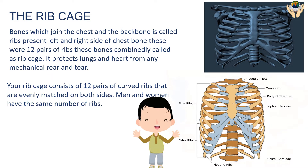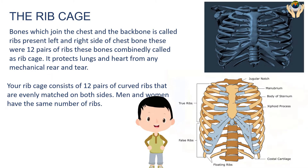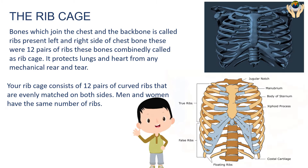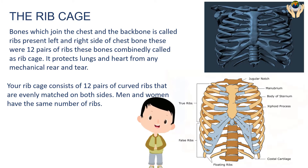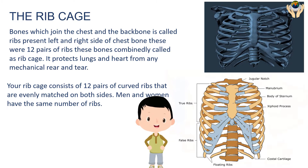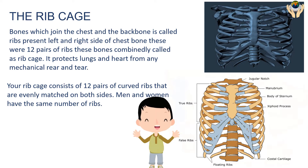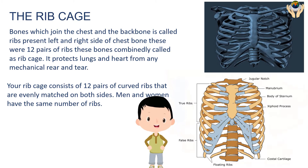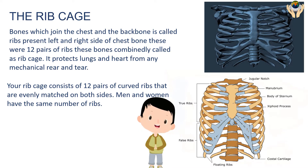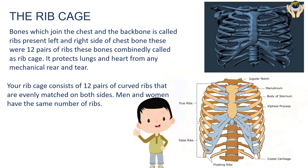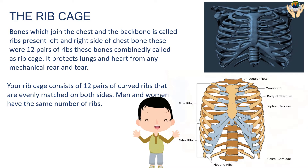The rib cage — bones which join the chest and the backbone are called ribs, present on the left and right side of the chest. There are 12 pairs of ribs, and these bones combined are called the rib cage. It protects the lungs and heart from any mechanical wear and tear. Your rib cage consists of 12 pairs of curved ribs matched on both sides. Men and women have the same number of ribs.